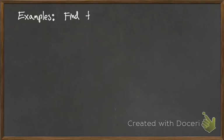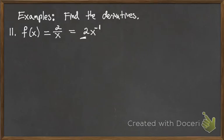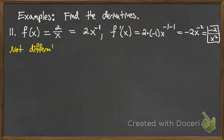Now more examples. For f(x) = 2/x, we rewrite it as 2x^(−1). Applying the power rule with the constant multiple theorem: f′(x) = 2·(−1)·x^(−2) = −2x^(−2) = −2/x². Not differentiable at x = 0, though 0 is not in the domain.